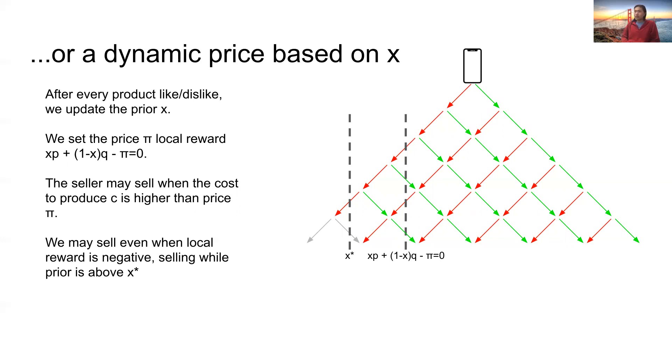We prove that the optimal price to set pi is such that the local reward is zero for the buyer, so then the buyer is not discriminatory towards purchasing the product.